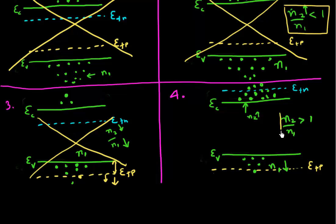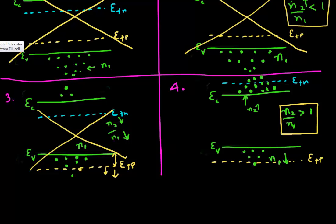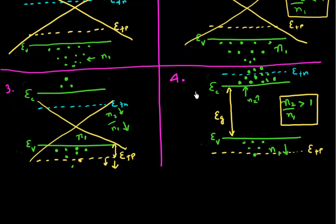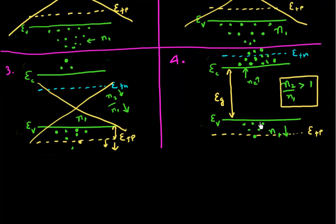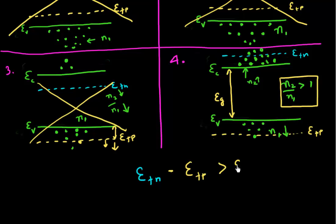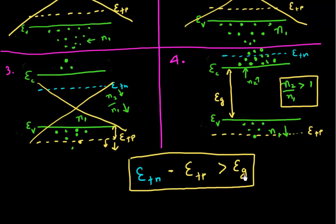So in terms of the location of these quasi-Fermi levels compared to the band gap, the condition for population inversion becomes that the difference between EFN and EFP should be greater than the band gap. In the next video, we'll see how we can achieve this in a PN diode.